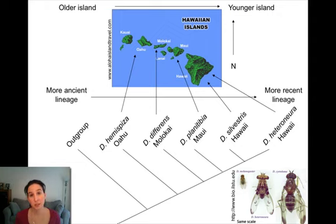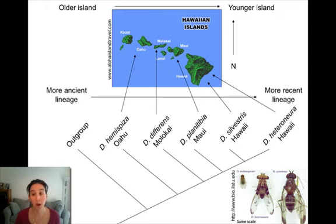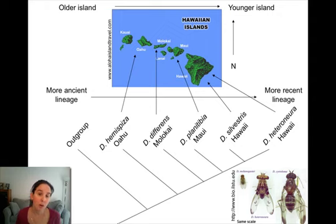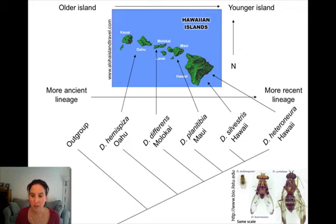There are multiple examples of dispersal and colonization as a mode of allopatric speciation. One of the best examples is Drosophila flies and Drosophila species in the Hawaiian Islands. Those of you taking genetics will become very familiar with Drosophila melanogaster, pictured at the bottom of your screen. Drosophila species are actually incredibly diverse, and in the Hawaiian Islands especially you get really interesting morphologically and genetically distinct species of Drosophila, such as Drosophila heteroneura, depicted here as one of the more recent lineages in the Hawaiian Islands.